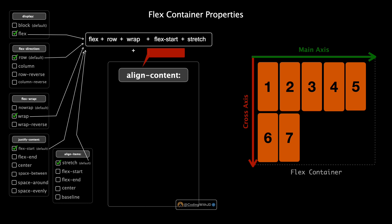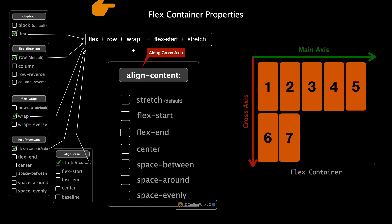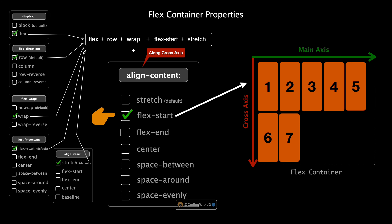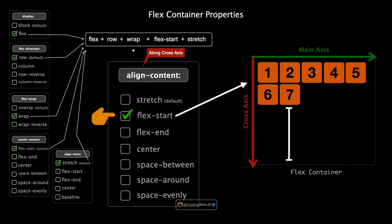The next property is align-content in flexbox, which controls the spacing and alignment of flex lines along the cross axis. This is similar to justify-content, but while justify-content deals with individual items, align-content manages entire lines of items — especially when there's extra space in a multi-line flex container. Its values are: stretch, flex-start, flex-end, center, space-between, space-around, and space-evenly. With stretch — the default — lines stretch to take up the remaining space in the container.